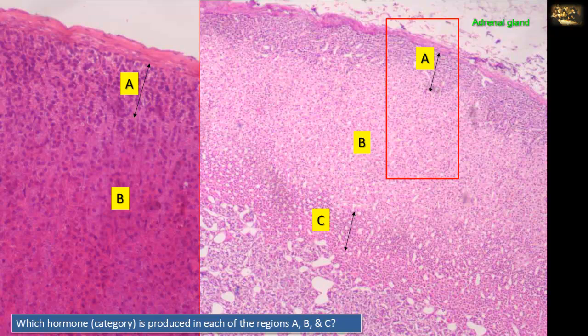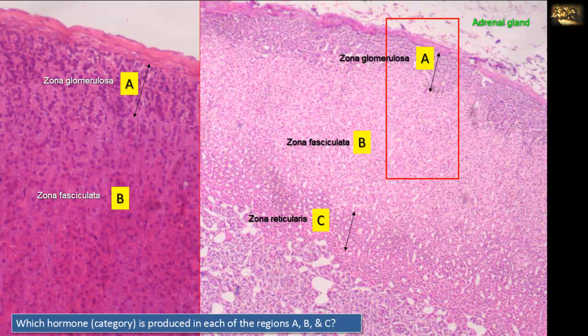They are the zona glomerulosa (G), represented in A; zona fasciculata (F), represented in B; and zona reticularis (R), represented in C. The layers are named according to the arrangement of the secretory cells, and you can see this clearly in the slide.